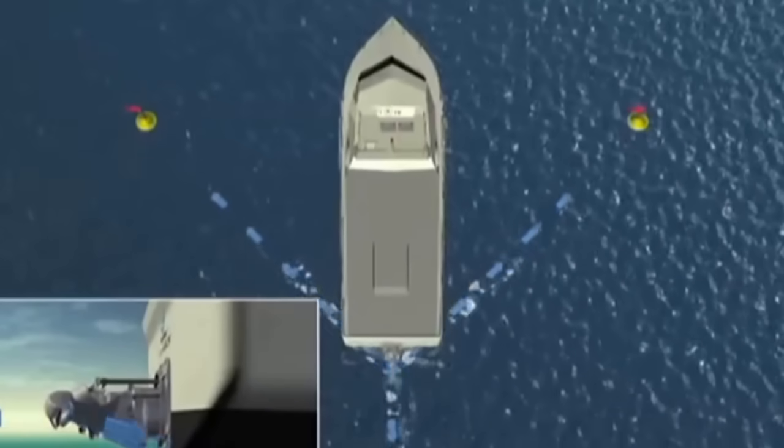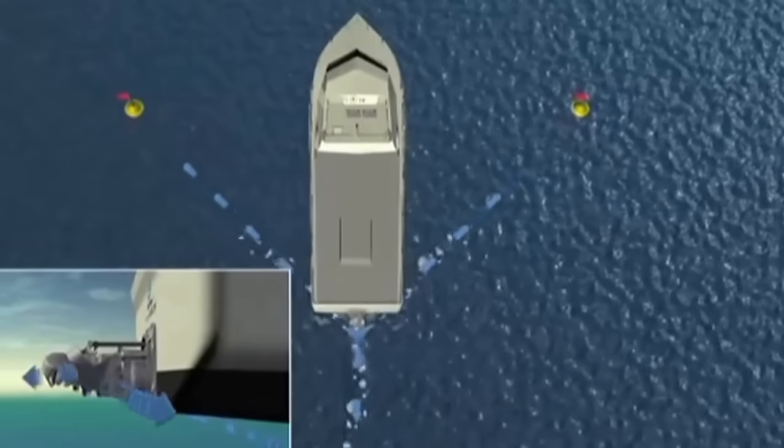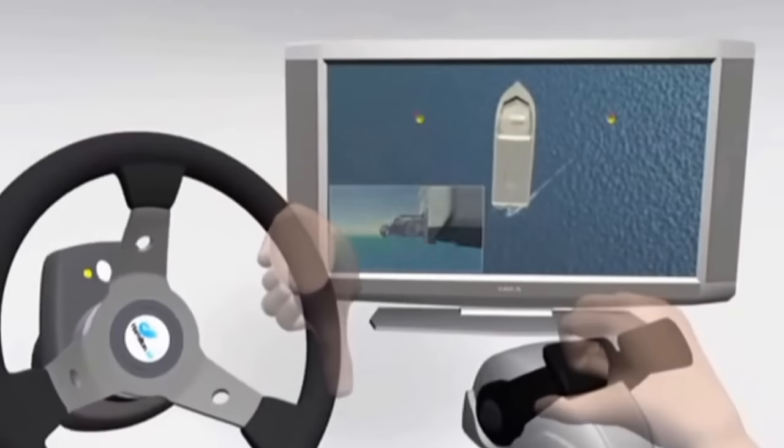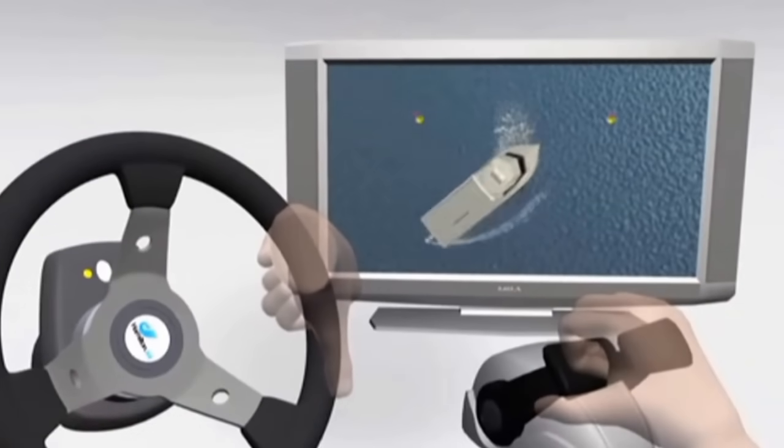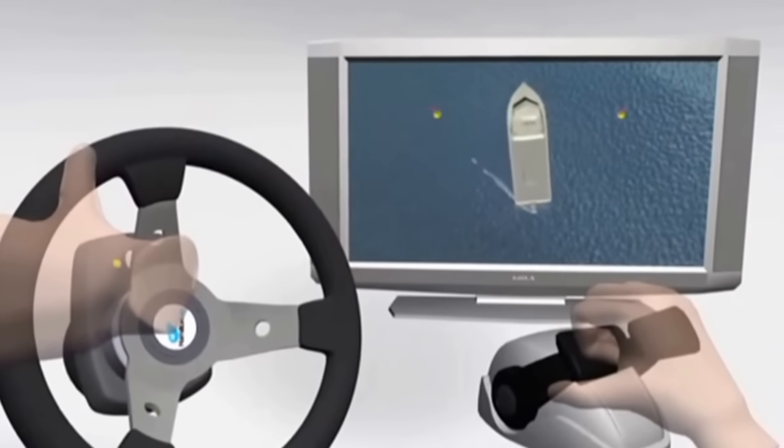One important aspect of Hamilton Jet Waterjet operation is that steering when going astern will be opposite to what the skipper may be used to from operating propeller boats or their car. A good rule of thumb is to remember that the bow of the vessel will always turn in the direction you rotate the helm wheel.